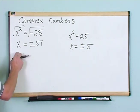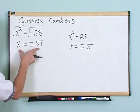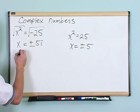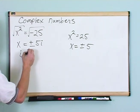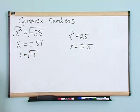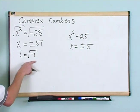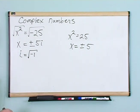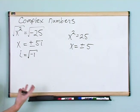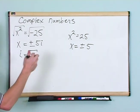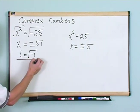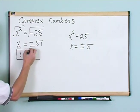One more crucial definition: mathematicians have defined i, by definition, to be the square root of negative one. You can't think of a real number that's the square root of negative one, so they made up a new number written as the letter i. This definition — i = √(-1) — is very important. You need to remember this.